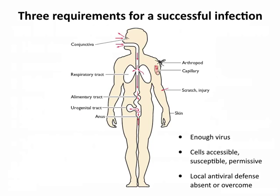There are three requirements for a successful infection of a host — by successful I simply mean the virus getting in, replicating, and producing more viruses, not necessarily producing disease. First, you have to have enough virus. We actually don't know what this is for most infections, because we can't take human subjects and infect them with most viruses — that's not an ethical experiment.